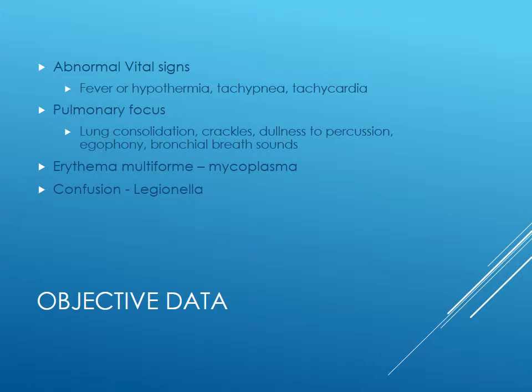For objective data, you need to do a thorough assessment. Check for fever, hypothermia, tachypnea, and tachycardia. Assess pulse, blood pressure, respiratory rate, and temperature. Look for signs of dehydration, cyanosis, alcoholism, and drug use. Focus on the chest: perform auscultation and listen for rales, egophony, fremitus, and bronchial breath sounds. Do percussion — it may reveal reduced tactile fremitus and dullness if there's a pleural effusion, or increased fremitus suggesting consolidation.